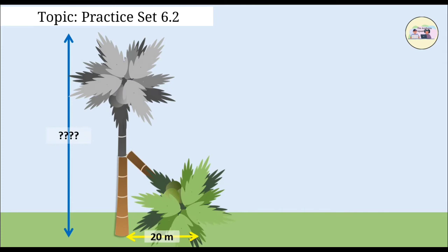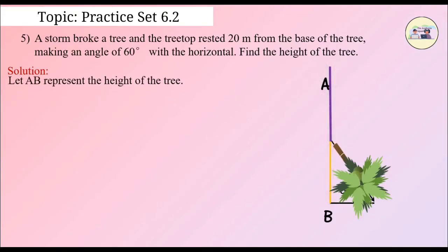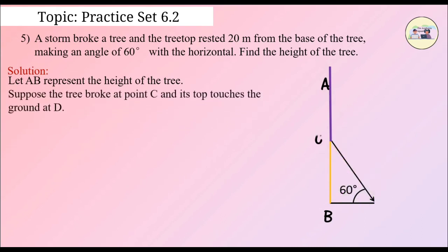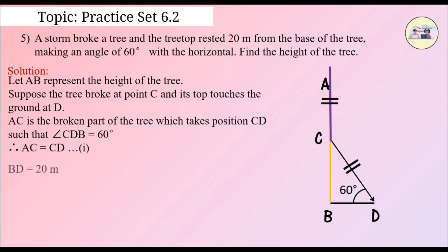Solution. Let AB represent the height of the tree. Suppose the tree broke at point C and its top touches the ground at D. Now, AC is the broken part of the tree, which takes position CD such that angle CDB is equal to 60 degrees. Therefore, AC is equal to CD (Equation 1). Here, we have to find the length of AB. Given BD is equal to 20 meters.